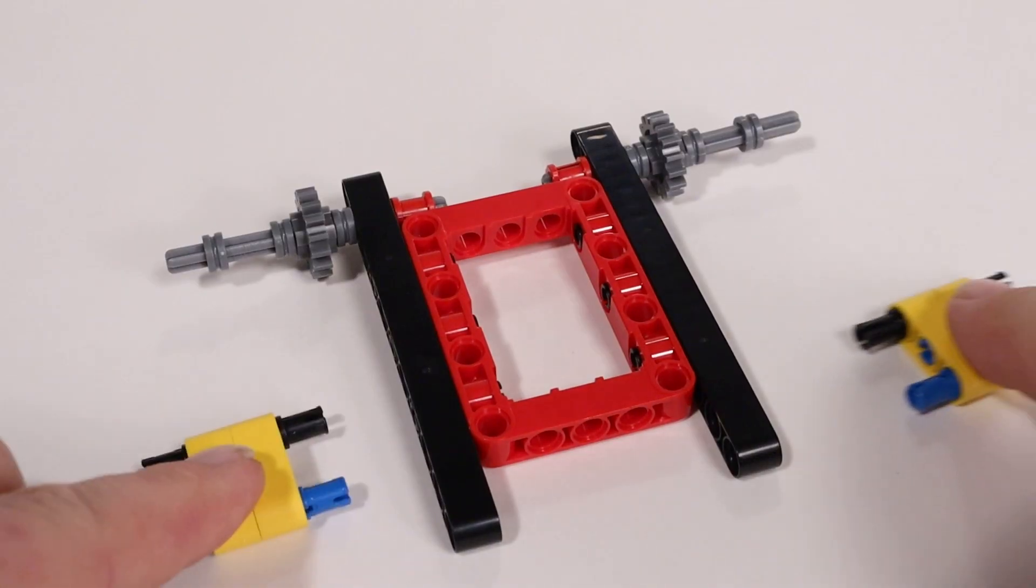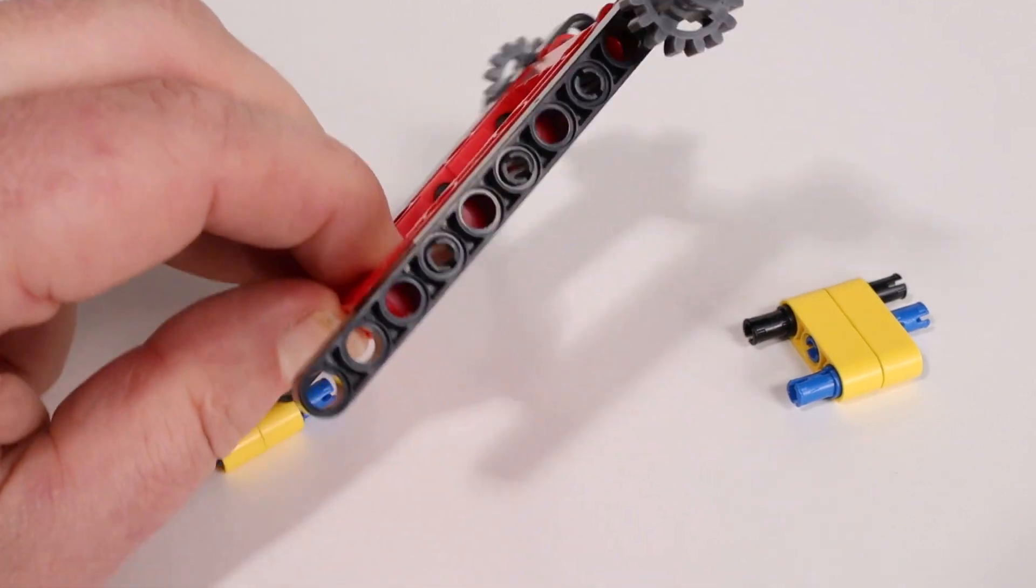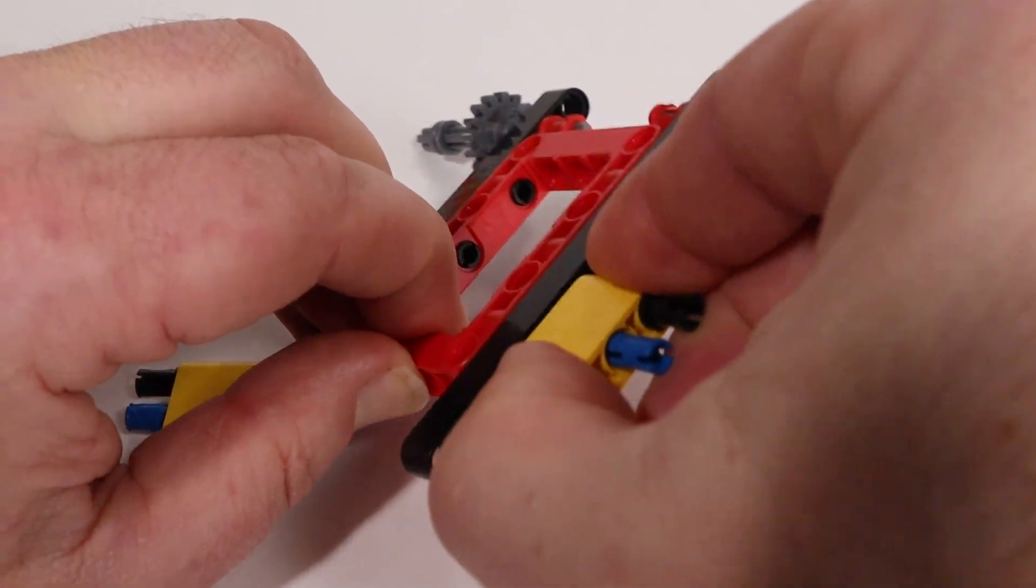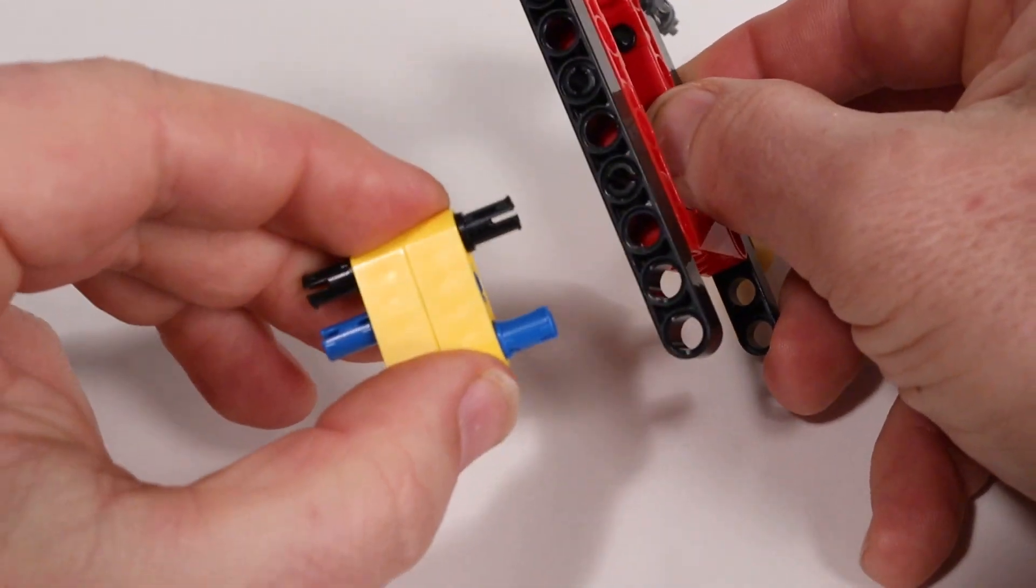Now bring the outside beam connectors to the framework we've already assembled. We're going to snap these into place on the black beam. Make sure that there's still two holes exposed on the end of the beam. Then we'll do the same on the other side.